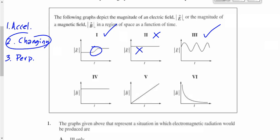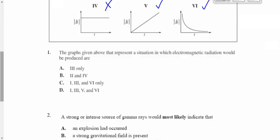What about five? Is that changing? Yep. It's constantly changing, but it's changing. So that's going to generate EMR. What about six? Yeah, that's changing as well. So our answer is going to be one, three, five, and six. Our answer is going to be D for this one. That make sense?